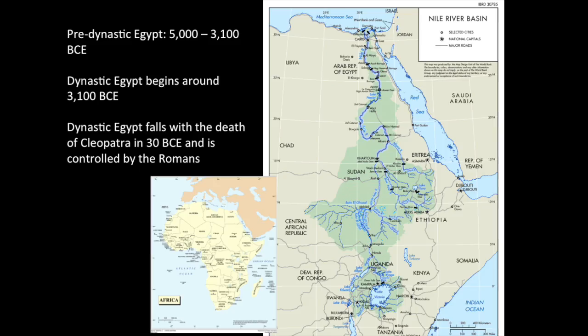Moving into pre-dynastic Egypt: unification in Egypt marks the beginning of the dynastic periods, so called by modern scholars. Until then, from about 5000 BCE, there had been groups settled in the Nile Delta, usually referred to as pre-dynastic Egypt. These groups migrated there during the Paleolithic and Neolithic times from deep in the heart of Africa, following the Nile to settle in the fertile lands at the Delta. This is a good time to point out that ancient Egypt is an African civilization, made by African people.